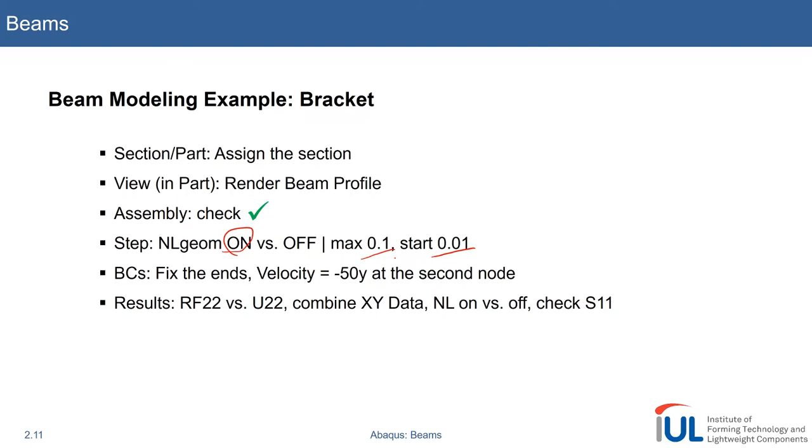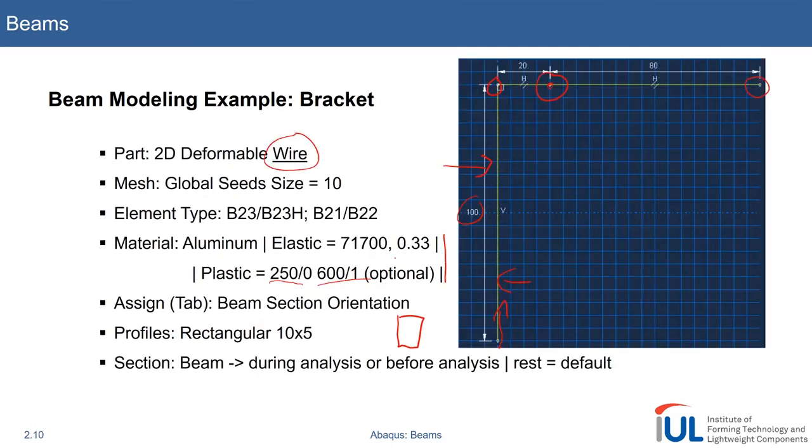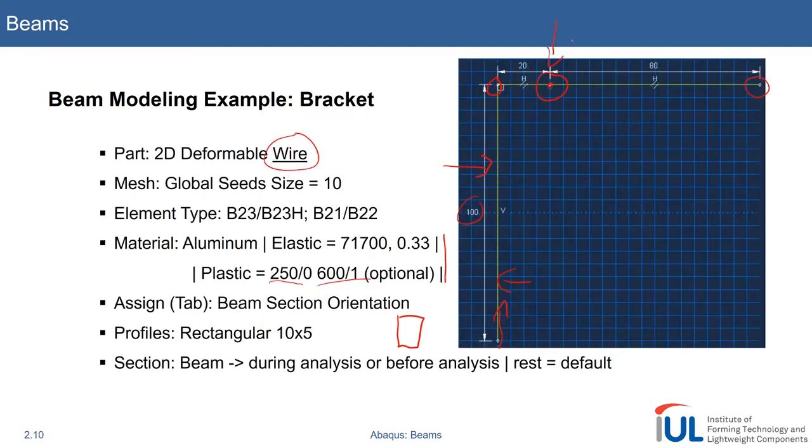For boundary conditions, we will fix the ends and apply a minus 50 velocity in y-direction at this specific feature point, which I talked about before.